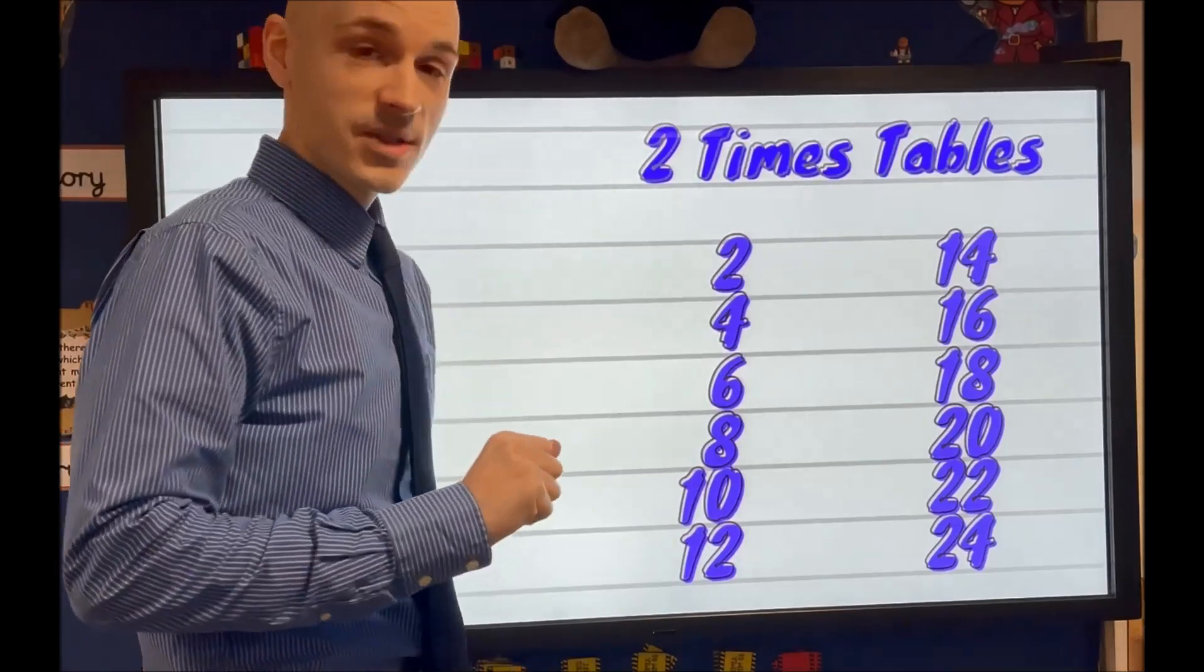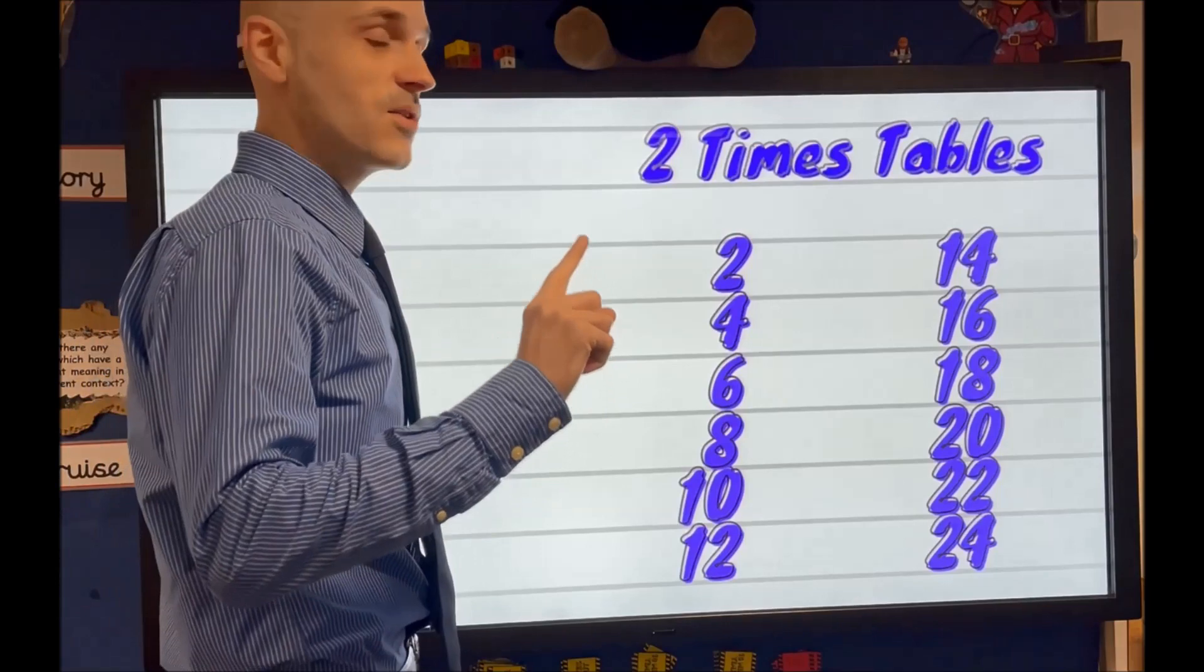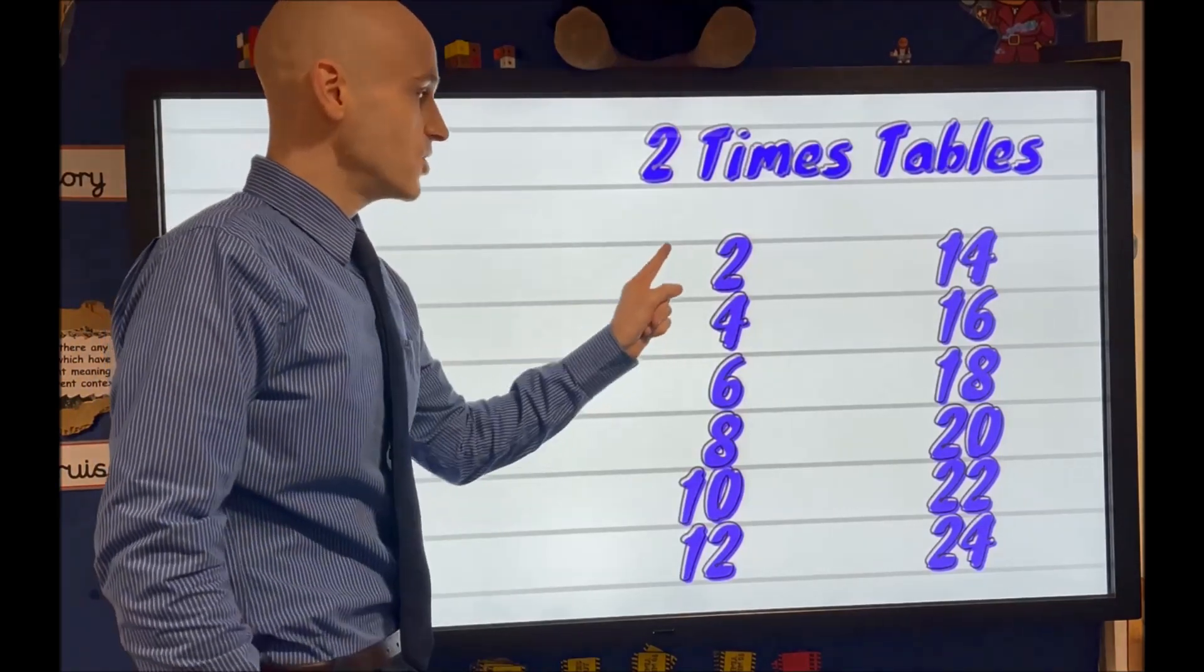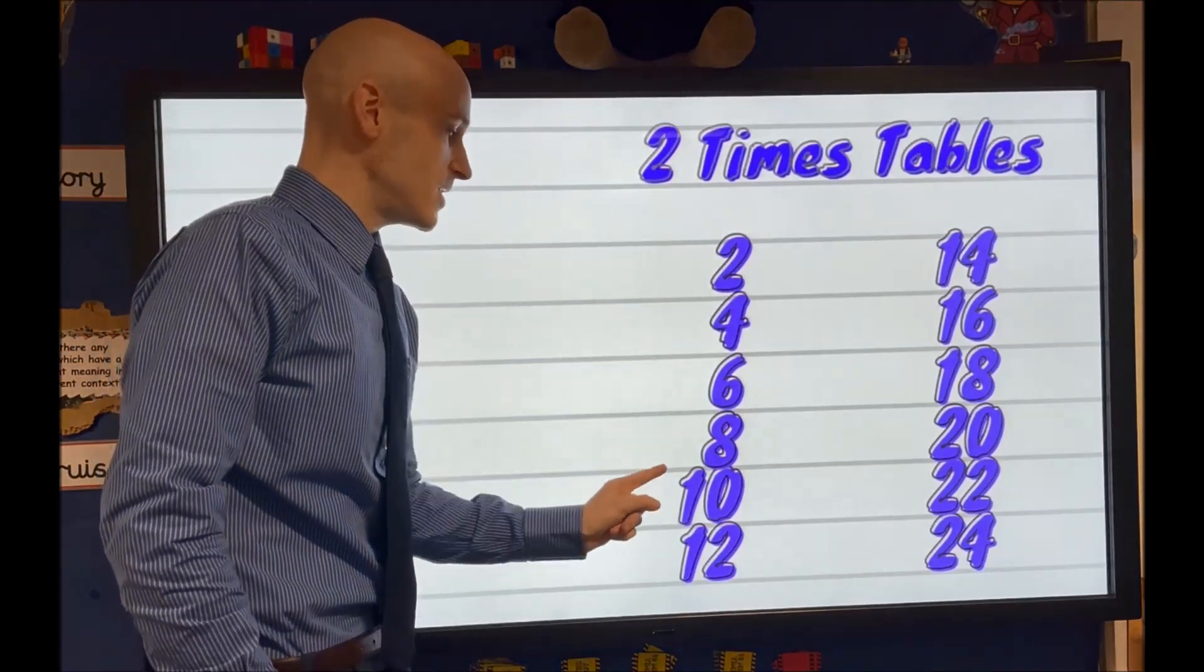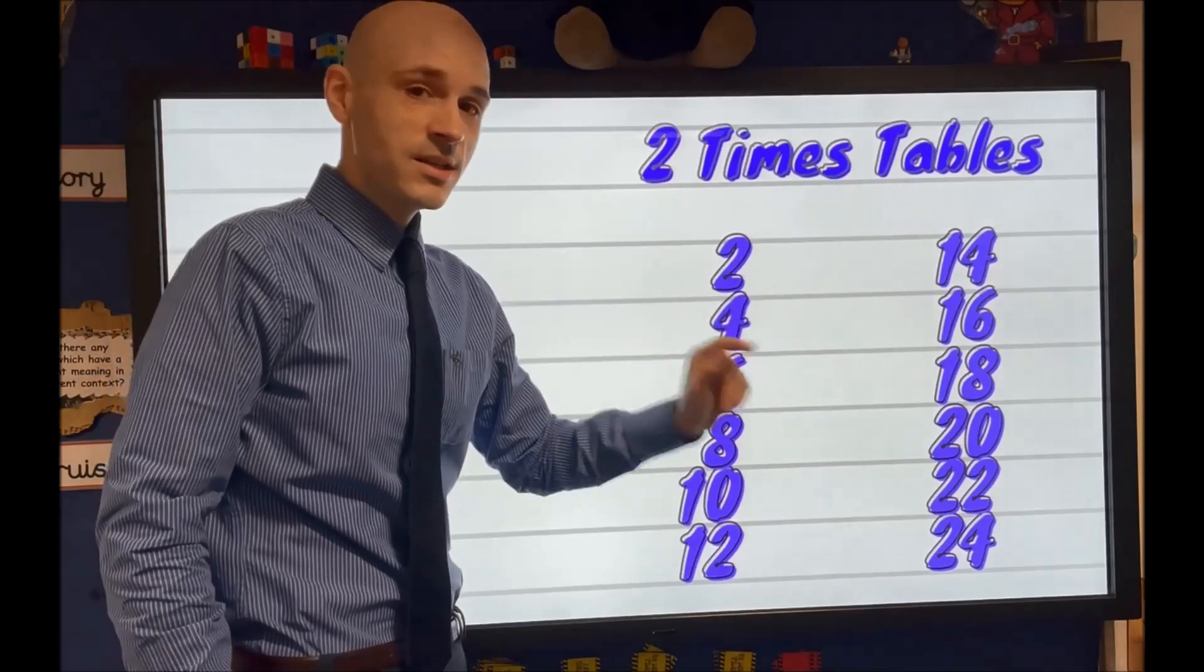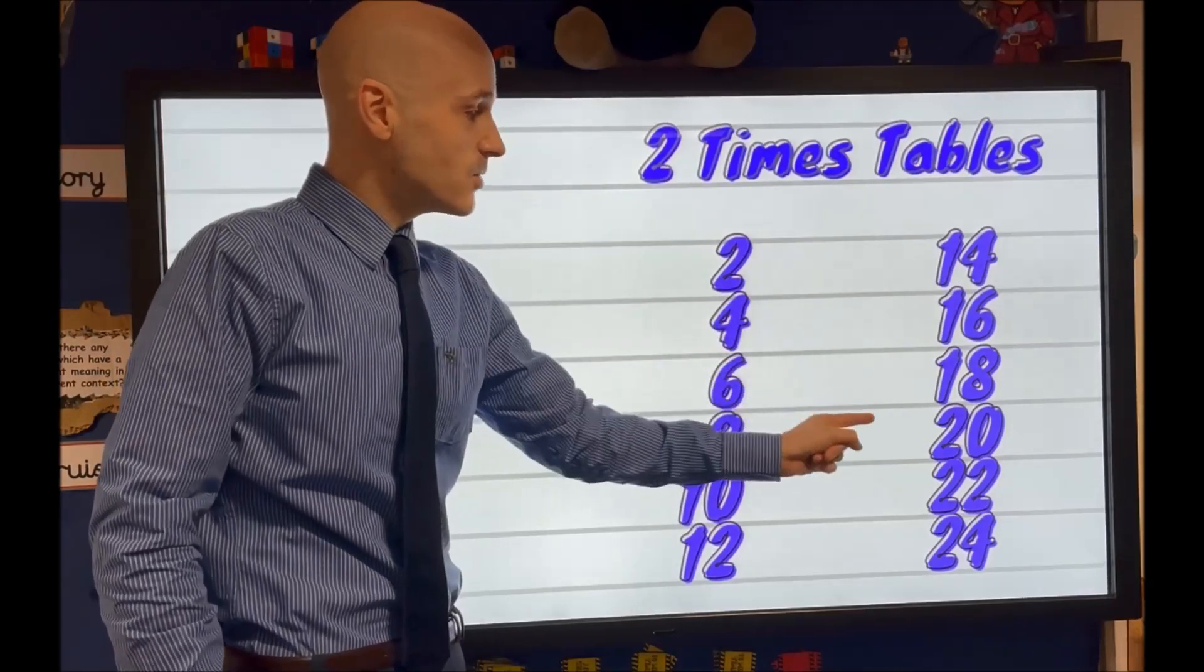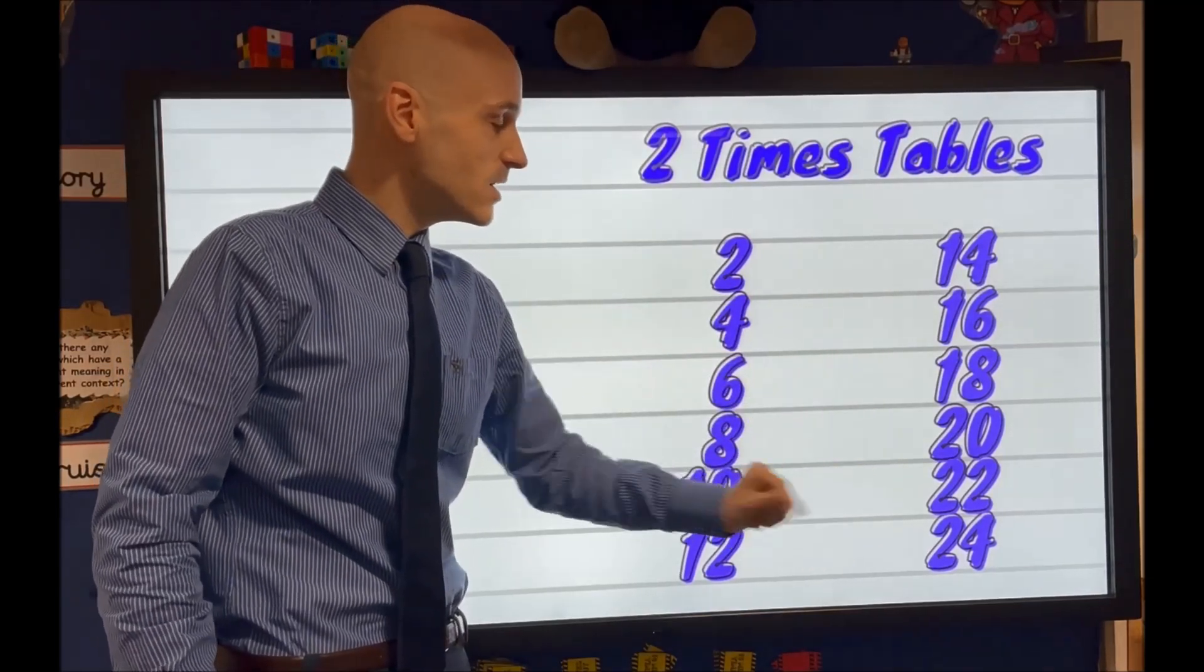Okay, we'll slow it down a little bit this time. See if you can join in with the slower version. Two, four, six, eight, ten, twelve, fourteen, sixteen, eighteen, twenty, twenty-two, twenty-four.